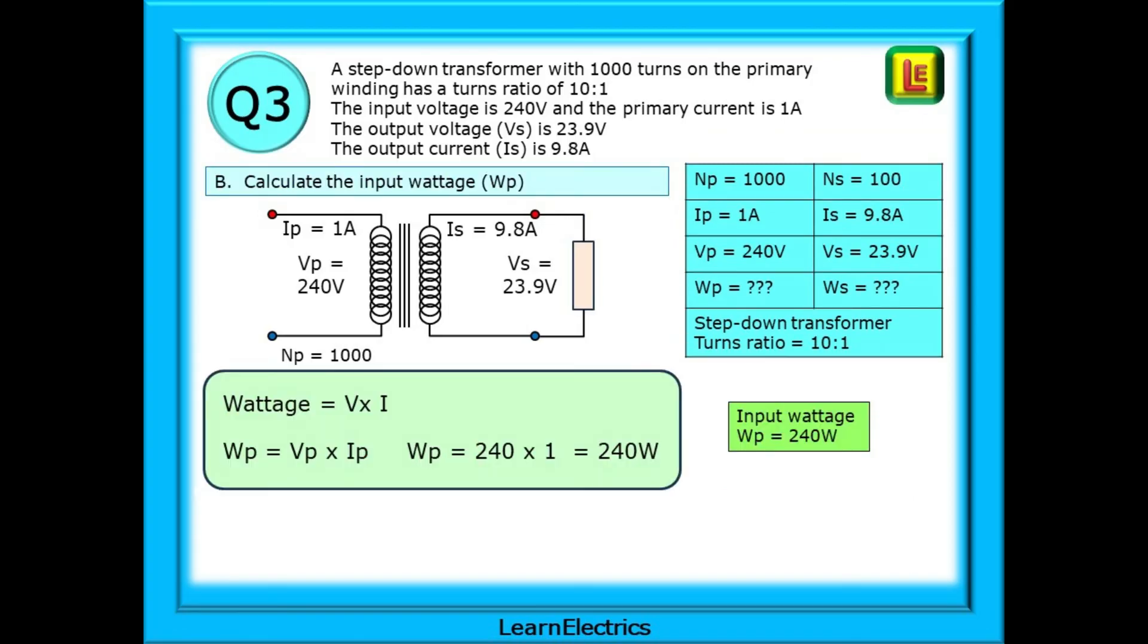Part B now. Calculate the input wattage WP. We have our table on the right with all the information from the question entered into it. We know from the power law triangle that WP equals VP multiplied by IP and we have both of those values already. 240 volts multiplied by 1 amp is an input power of 240 watts. WP equals 240 watts.